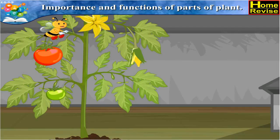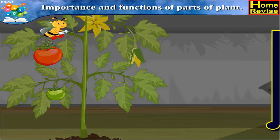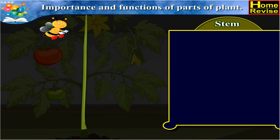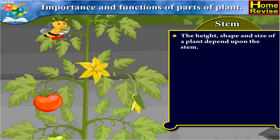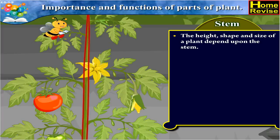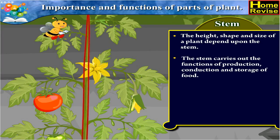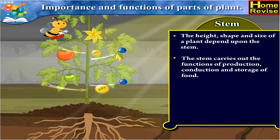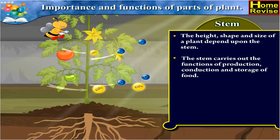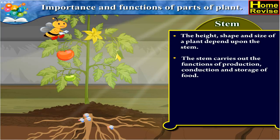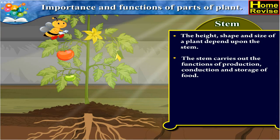The third part of the plant is the stem. The height, shape and size of a plant depends upon the stem. The stem carries out the functions of production, conduction and storage of food.